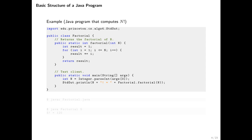Now let's look at the next method, main. It has the signature: public, static, void — meaning it doesn't return a value — and it takes a parameter called args, which is an array. An array is denoted by a set of square brackets, a one-dimensional array, and it is an array of String objects.